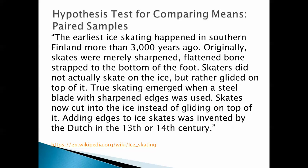By the way, the earliest ice skating happened in southern Finland more than 3,000 years ago, according to Wikipedia, the founder of all knowledge. Originally, skates were merely sharpened, flattened bones strapped to the bottom of the foot. Skaters did not actually glide on the ice, but rather glided on top of it. They didn't skate on the ice. They just glided on top of it. True skating emerged when a steel blade with sharpened edges was used. Skates now cut into the ice instead of gliding on top of it. Adding edges to ice skates was invented by the Dutch in the 13th or 14th century.